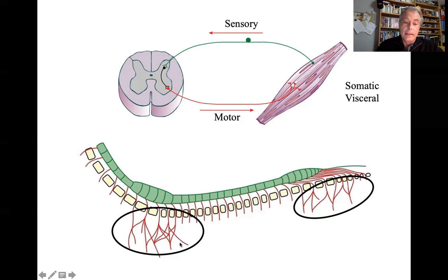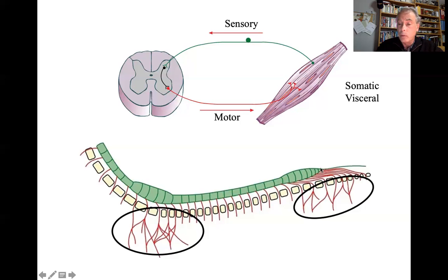All these spinal nerves — the ventral branches from C6 up to T2 — will form the brachial plexus, and the spinal nerves from L4 up to S3 are going to form the lumbosacral plexus.